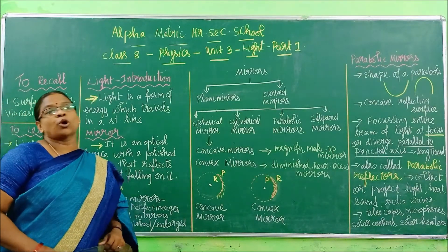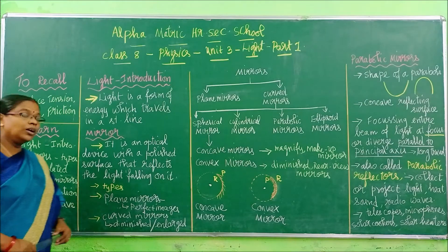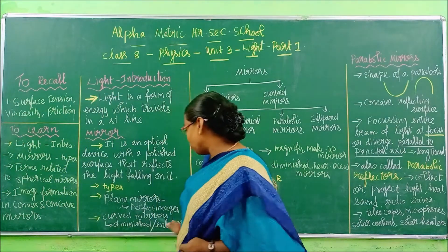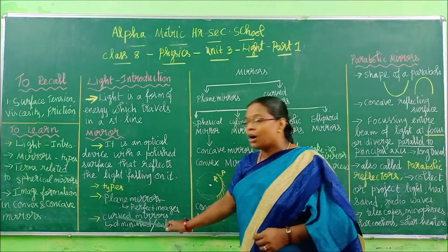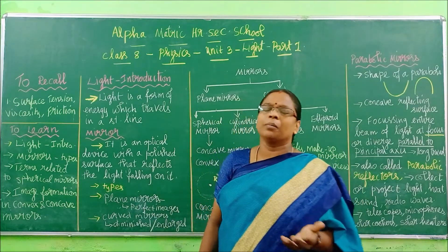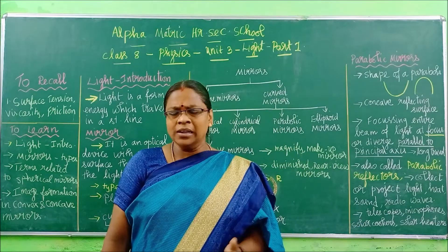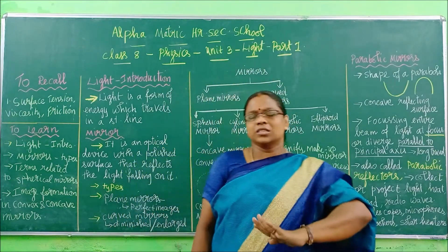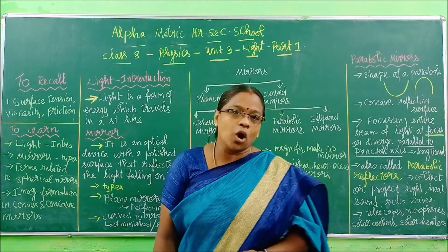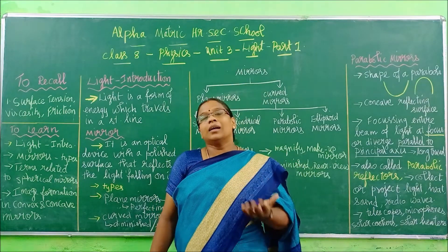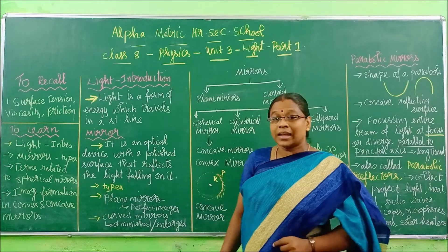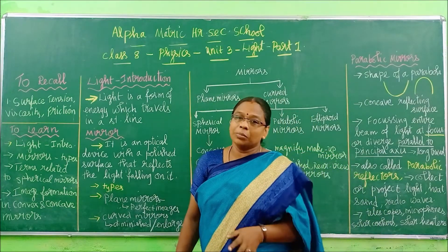Next we are going to see the types of mirrors. We have two main types: plain mirrors and curved mirrors. Plain mirrors are just the ordinary mirrors we have at home — they will be straight in surface, one side polished with either aluminium or silver, and the other side is the reflecting surface. We also have another type called curved mirrors.